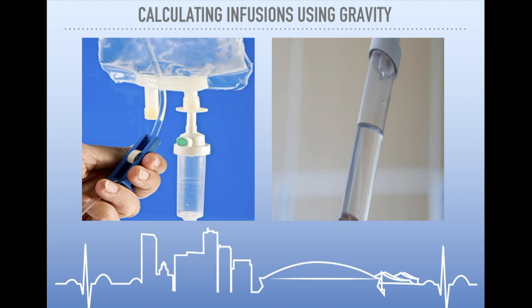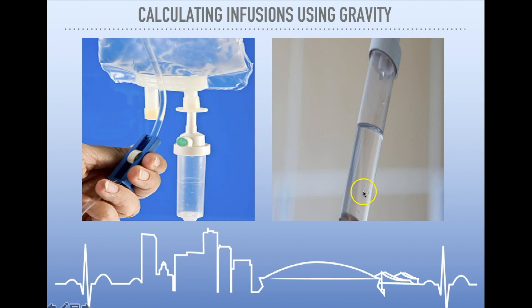All we have to do is grab our infusion, grab our drop set, and then we need to figure out what kind of drop set we're using — whether it's a 10 drop set, a 15 drop set, or a 60 drop set. With a drop set, what we're trying to figure out is how many drops equals one milliliter in the drip chamber.